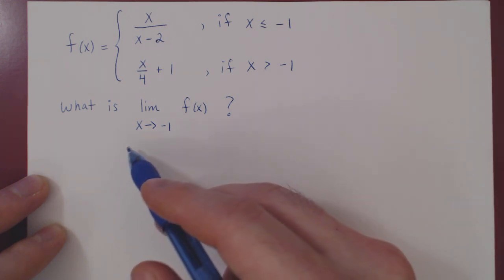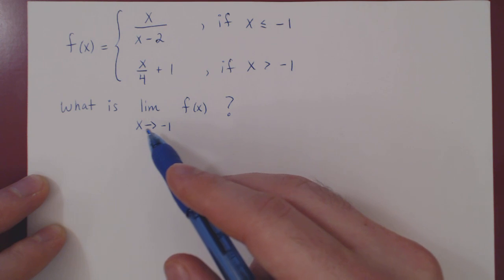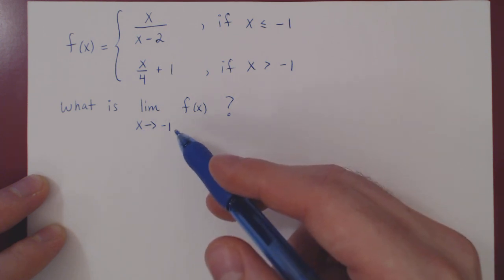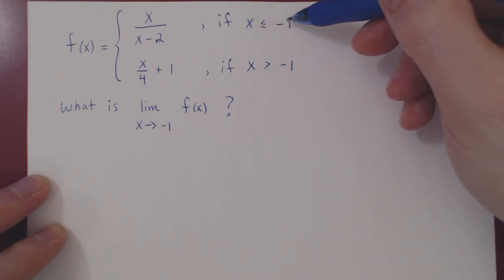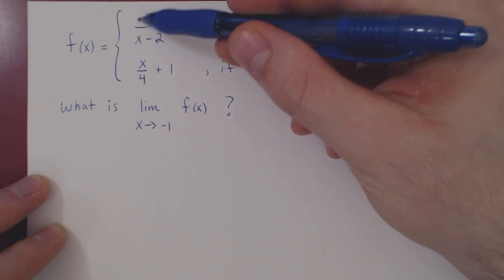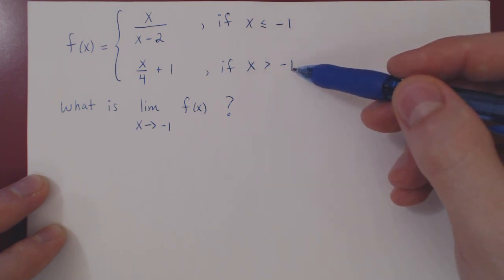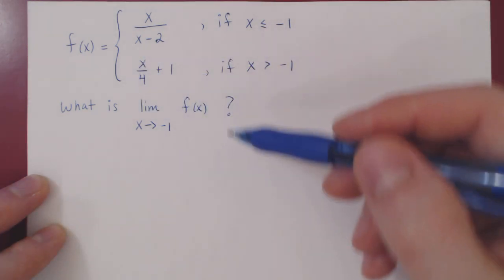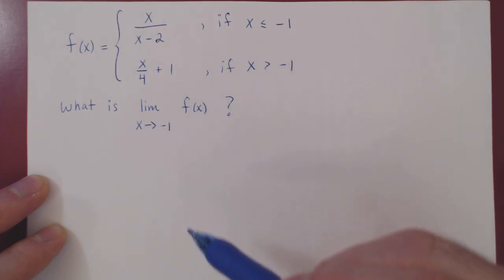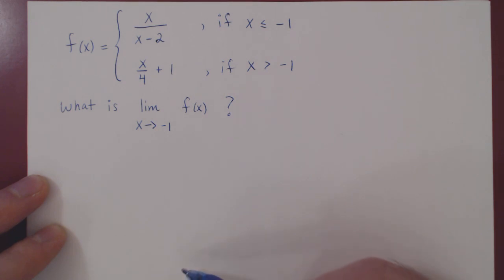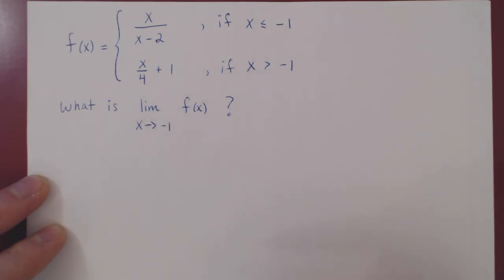There is ambiguity with this two-sided limit. x could be approaching negative 1 from the left or from the right. From the left of negative 1, when x is smaller than negative 1 we use the first function, and when x is larger than negative 1 we use the second. This is a case where we have to use the left-sided limit and then the right-sided limit, and compare to see if the original two-sided limit actually exists.